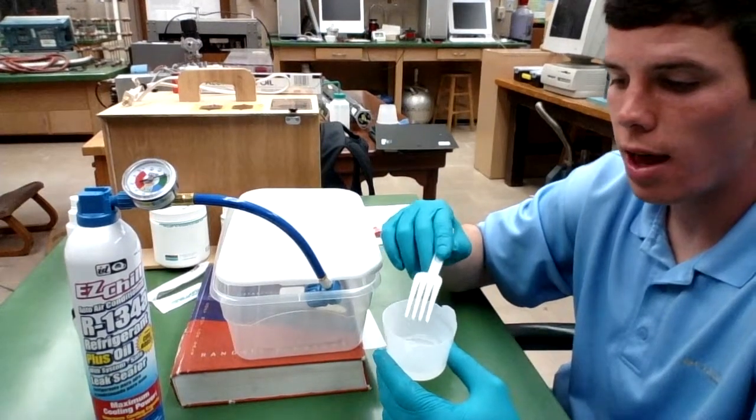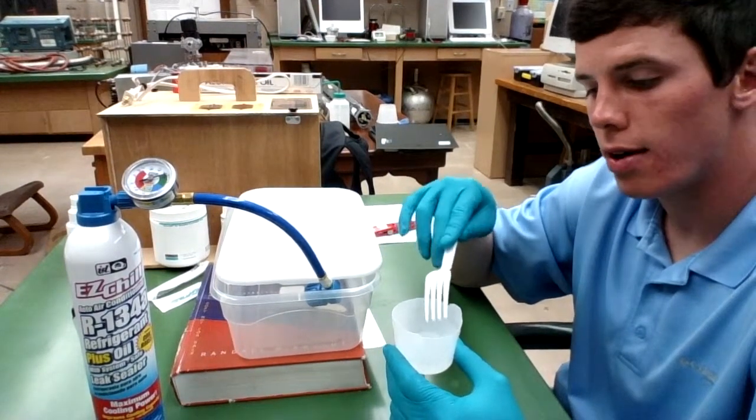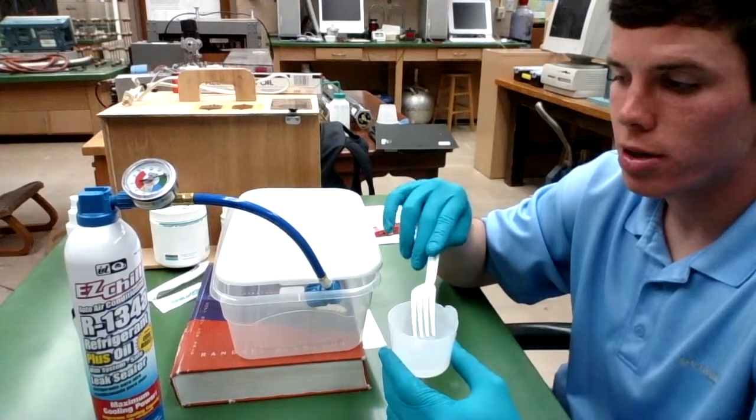So the cheap way to drive out all of these bubbles from the PDMS is to fill a chamber, this little Tupperware container here, with automobile refrigerant.